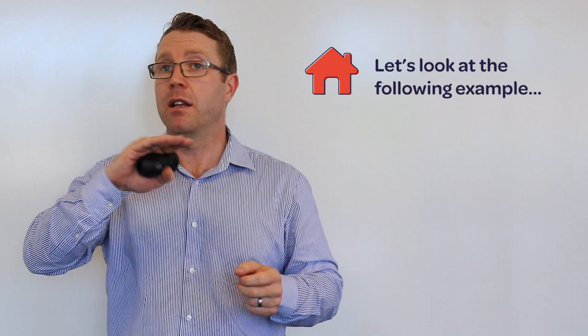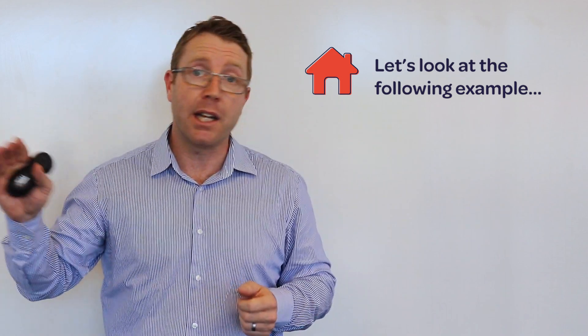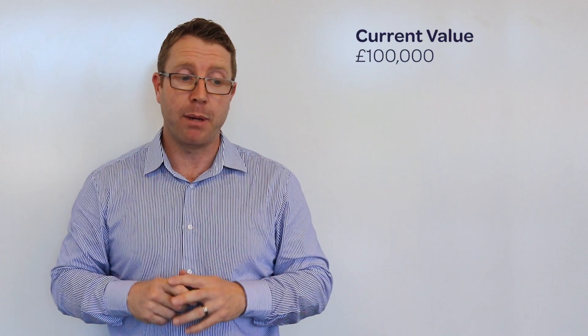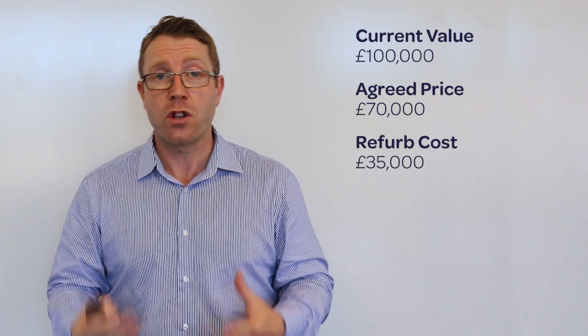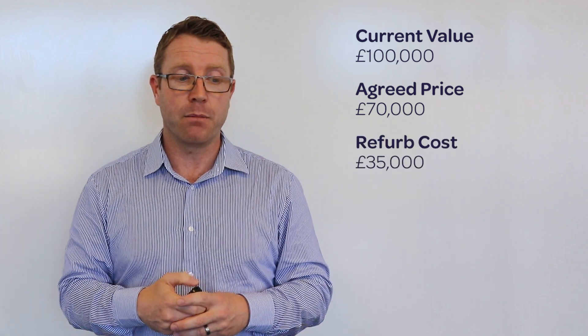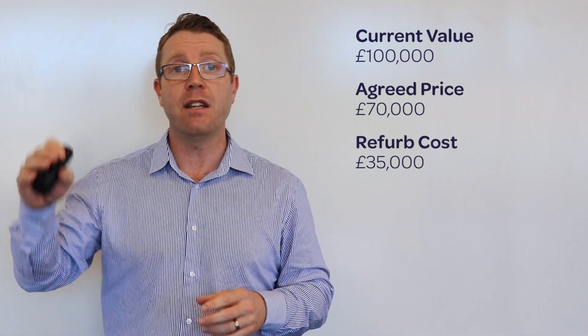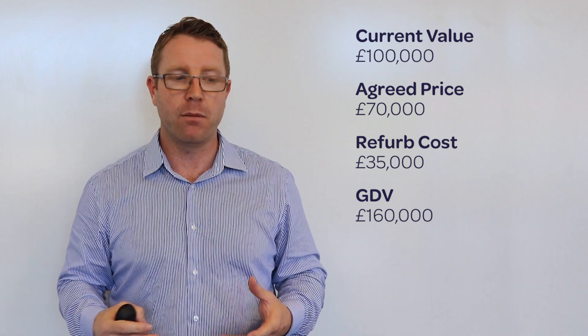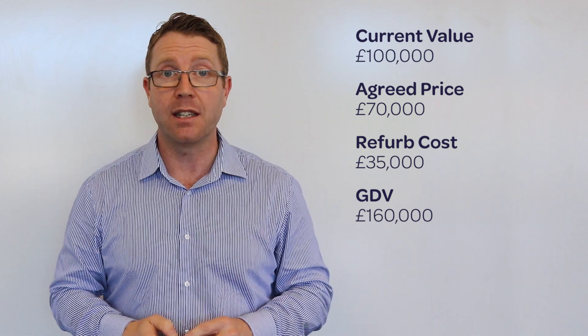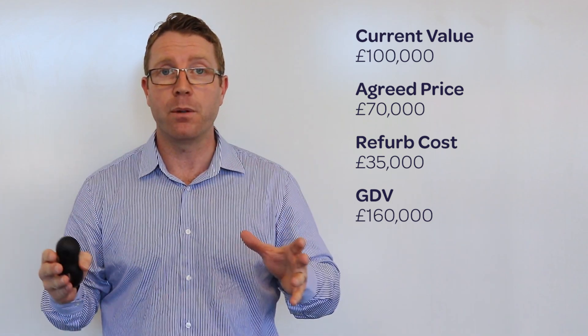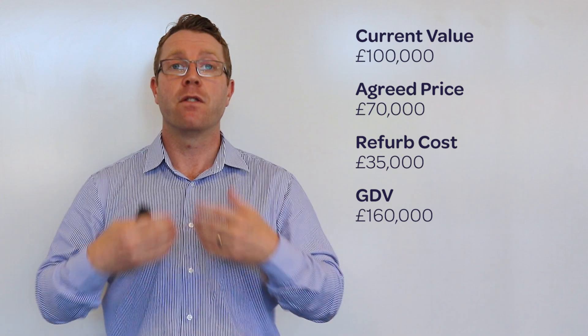Let's use an example of a house where the current value is £100,000, the agreed sale price is £70,000, the refurb is going to cost £35,000, and the GDV — the end value once that refurb is done — is going to be £160,000. That's the example we'll use to show how to calculate the ROCE.